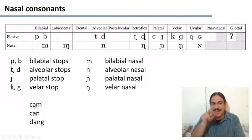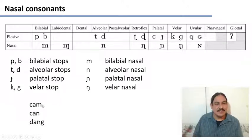Please try to give us the IPA transcription for these three words in English. Can, tan, and dan. Please pause the video.